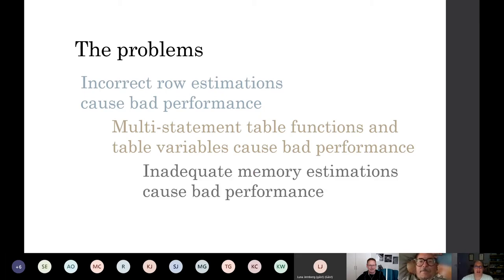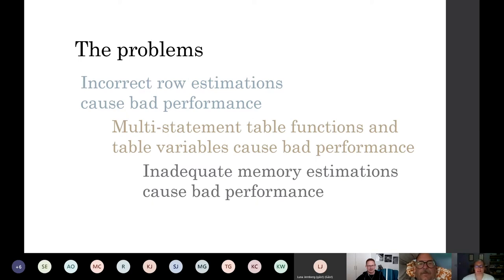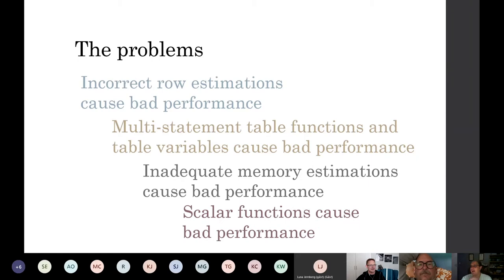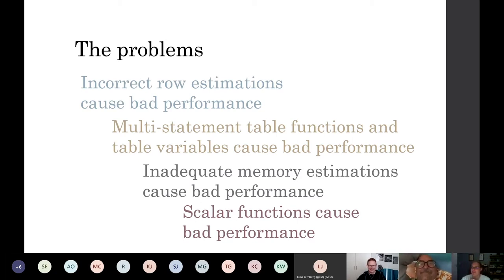Multistatement table functions can cause problems, and table variables are also known to cause them. Number three: inadequate memory estimations cause bad performance. Anyone who's played with execution plans may be familiar with the spill to tempdb warning. We use memory because disk is slow, so using disk to pretend to be memory is a really bad idea. If SQL gets the memory estimations wrong, all sorts of hell follows. And lastly, scalar functions cause bad performance.